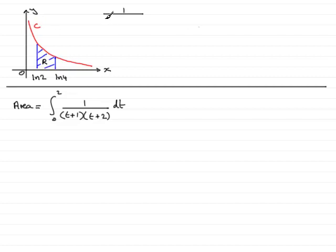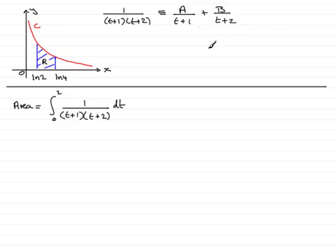We start with 1 over (t+1)(t+2). Because these two factors are linear factors, this gives rise to partial fractions of the form A over (t+1) plus B over (t+2). We then multiply both sides of this identity by the denominator (t+1)(t+2), which gives: 1 ≡ A(t+2) + B(t+1).